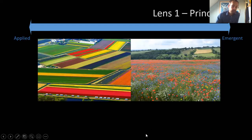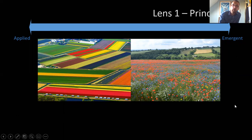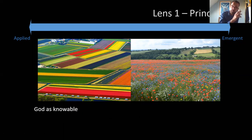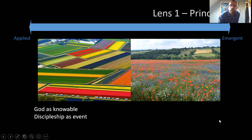We're going to briefly dig into some of these lenses. The lens of principle sits between an applied theology and something of a more emergent theology. On one end of the spectrum there is a theology that prefers to recognize God as knowable — we know things about God and therefore we can tell other people about those things with a degree of certainty and authority. It tends to go with an understanding of discipleship as an event — we've taken on these knowable things about God and Jesus and we've become a Christian.